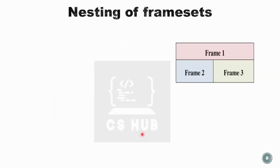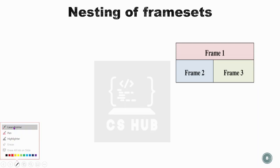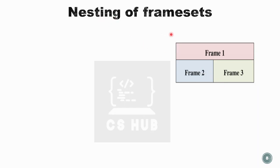This is the nesting of framesets. When using a frameset, we can use either rows or cols attributes. In this example, there are two rows, and the second row is again divided into two columns. For this we need to nest framesets. The main frameset contains two rows.